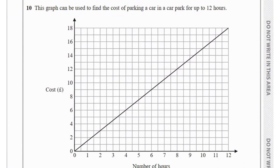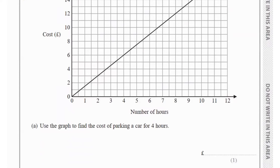Question 10 says this graph can be used to find the cost of parking a car for up to 12 hours. To find the cost of parking for 4 hours, draw a line from the 4-hour mark on the time axis up to the graph. The corresponding cost value is 6 pounds.